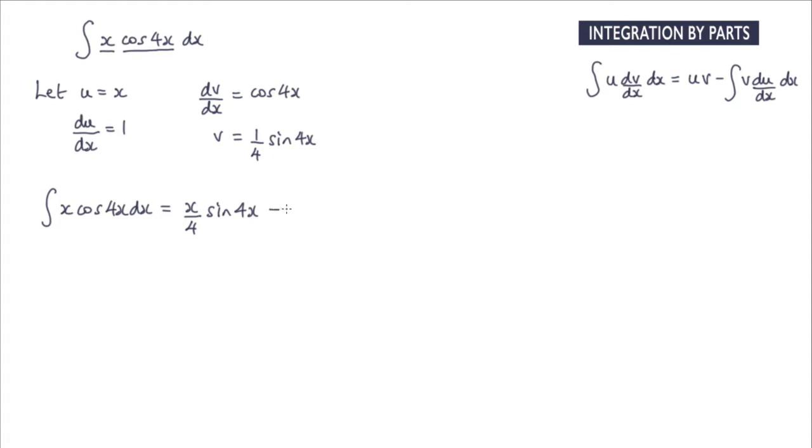And then we're subtracting the integral of the v term multiplied by du by dx. So that's just going to be 1 quarter sine of 4x with respect to x.